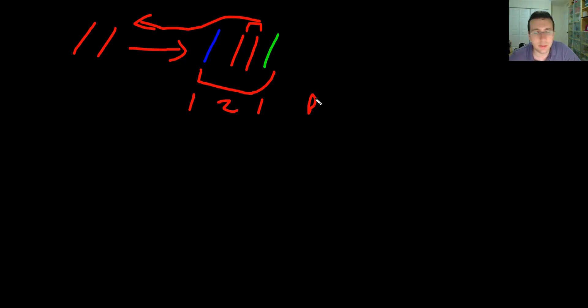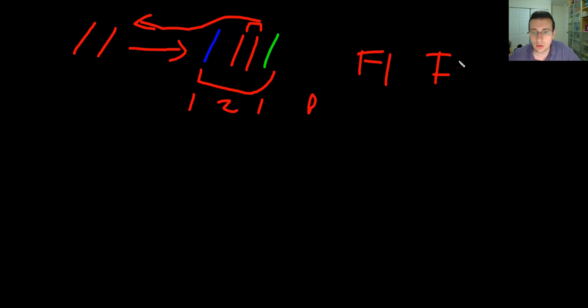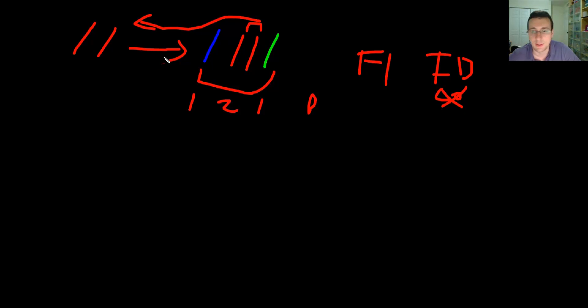The only crosses that show something like this are crosses involving incomplete dominance or co-dominance. In this case, it's not co-dominance because I don't have two looks at once — I only have one look at once. So I'm talking about incomplete dominance here.